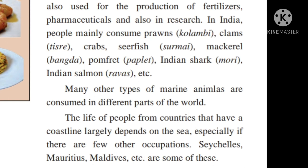In India, many people consume different varieties of seafood like prawns, clams, crabs, seer fish, mackerels, Indian shark, Indian salmon, etc. The life of people from countries like Mauritius, Maldives, etc. largely depends on the seas.